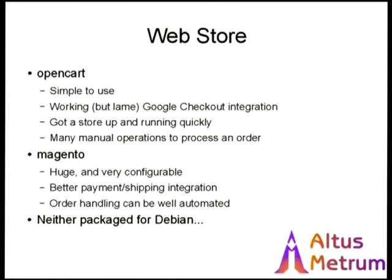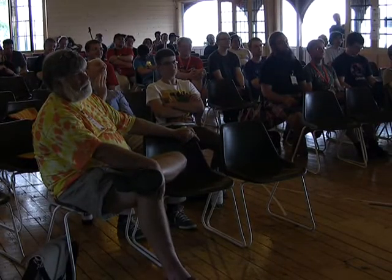For the web store front — neither of these is available in Debian, which would be an opportunity. We started out building our store with a system called OpenCart. It was fairly easy to use, had preconstructed store templates so you just dump your products in and see them immediately, and it had a primitive Google Checkout integration. The problem was getting an order out of the system, getting the shipping label printed, and processing through Google Checkout took a lot of clicking and a lot of manual interaction.